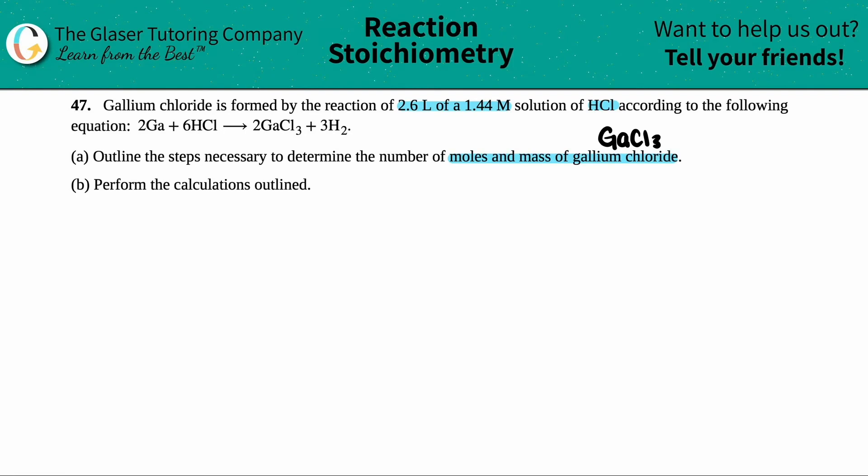So the first thing is I'm going to just write out the balanced equation again because I just like to look at things bigger because I can't see. So yeah, 2GaCl3 and then 3H2. Perfect. Now I do notice that they gave us coefficients in the front, right? There's a 2 for the Ga. There's a 6, there's a 2, and there's a 3. This means the balanced equation is already balanced. So I don't have to work with it. So that's like a little gift. So thank you.